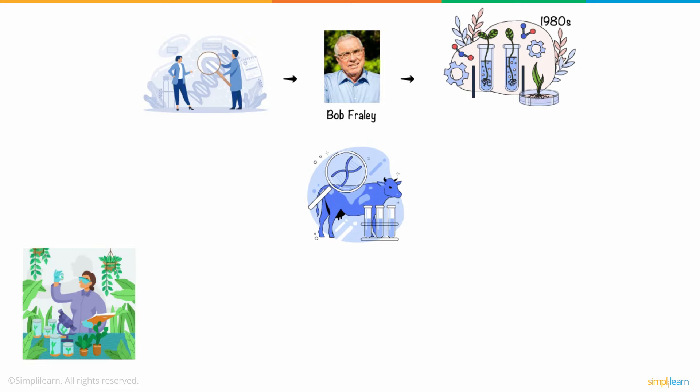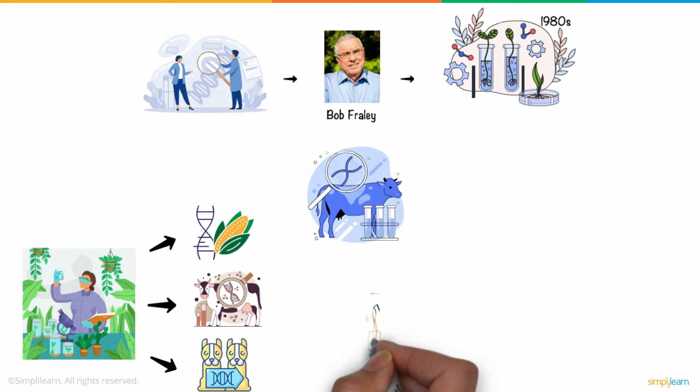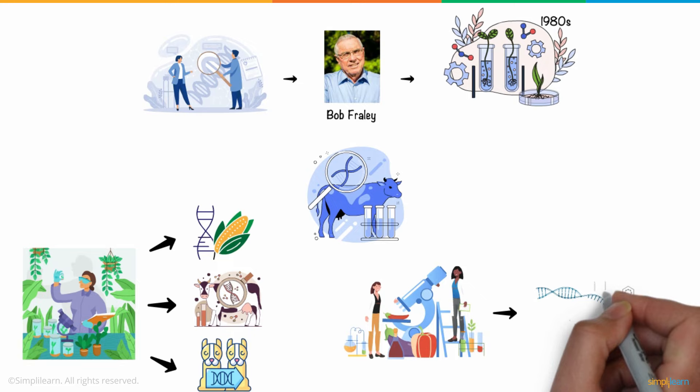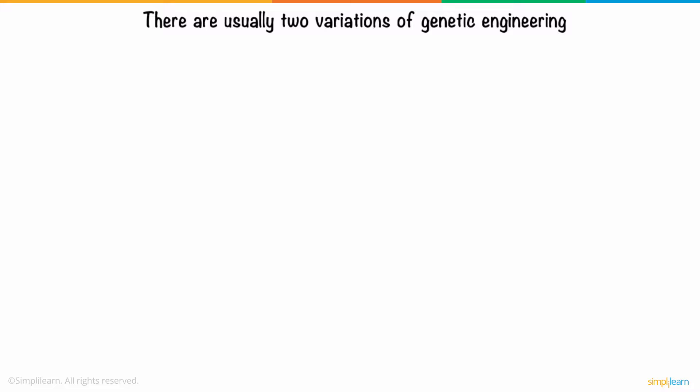Such as corn, cows, and even dogs. But recent developments in biotechnology have made it possible for researchers to directly alter the DNA of animals, plants, and microbes. There are usually two variations of genetic engineering.